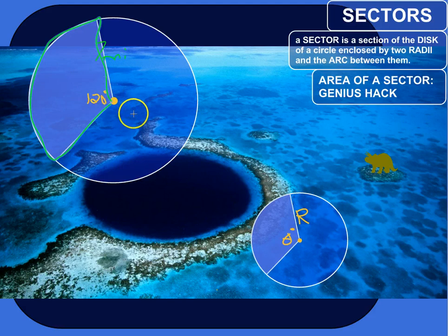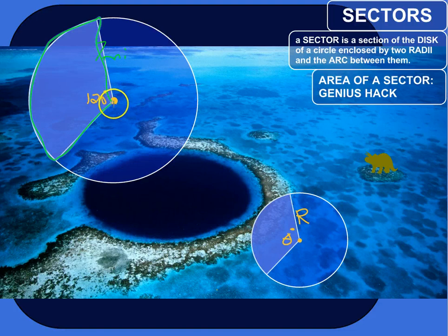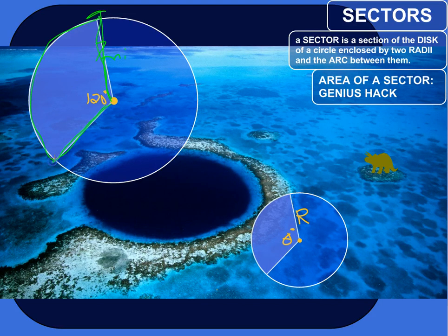The sector has a central angle of 120 degrees. The central angle is an angle formed by two lines that intersect with the circle itself — it intersects there and there. The vertex of the angle is right on the center of the circle, where the two lines meet.